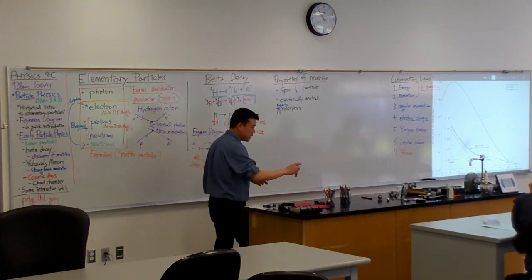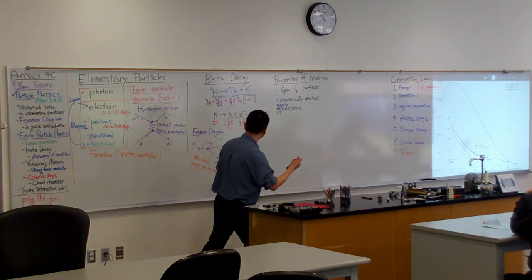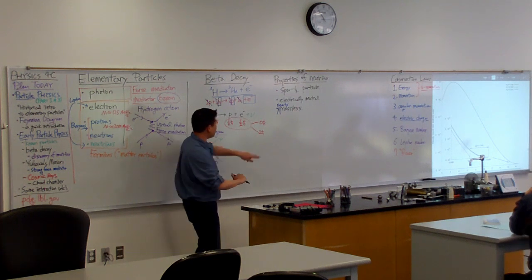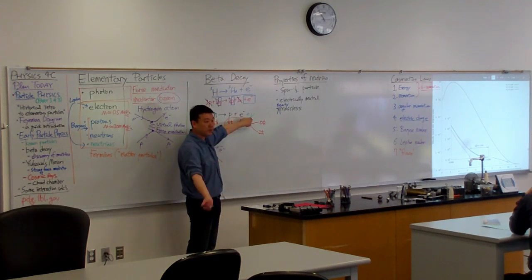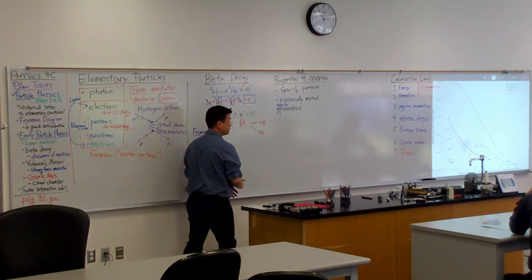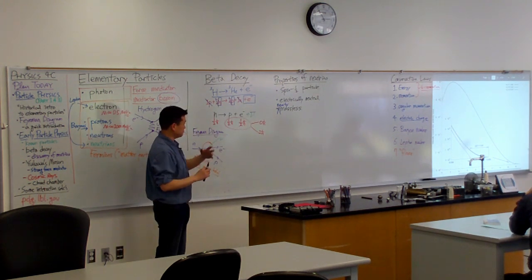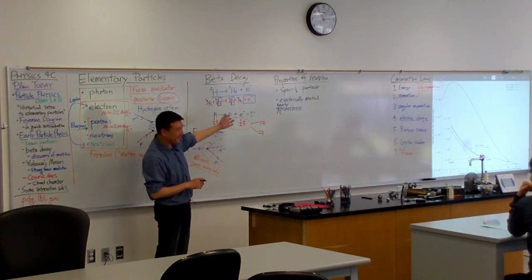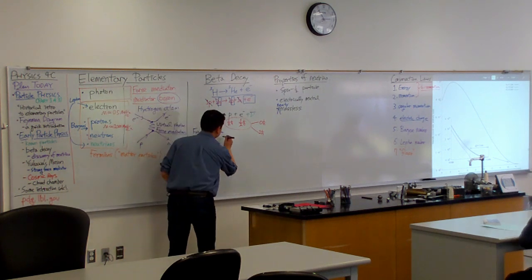So these are the symbols we use to indicate antiparticles. For the particle, the typical way to indicate it's an antiparticle, we put a bar over it. So that means it's antineutrino. So this is antineutrino.